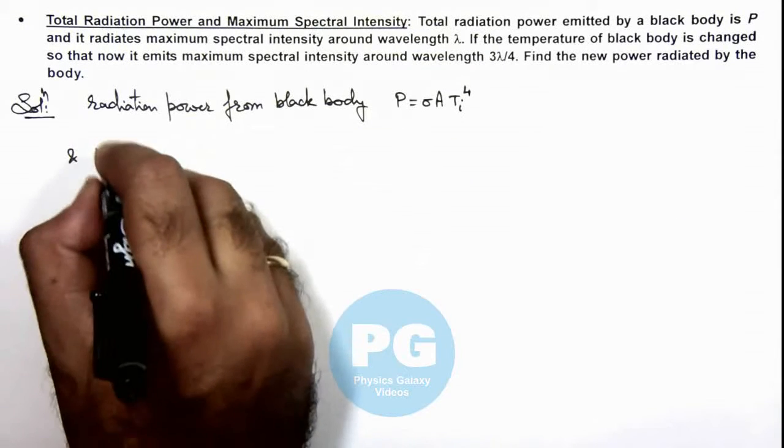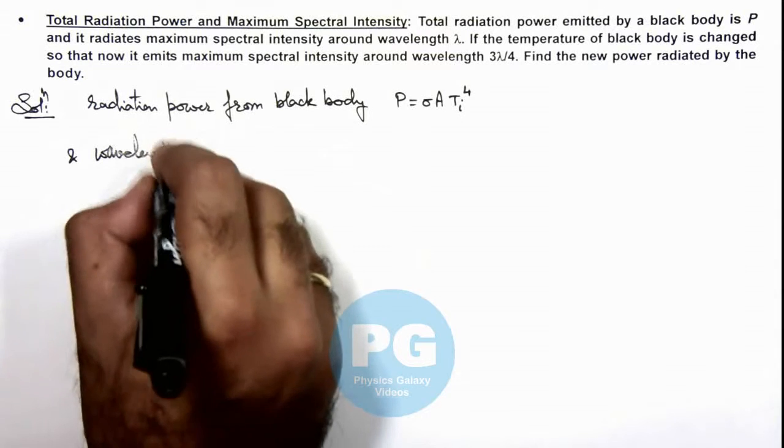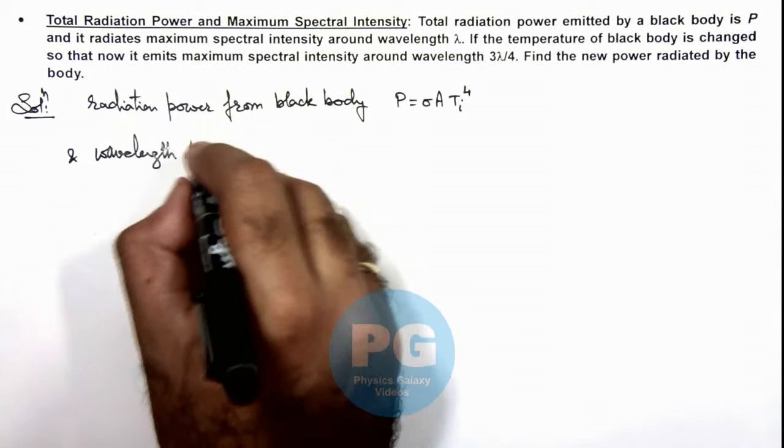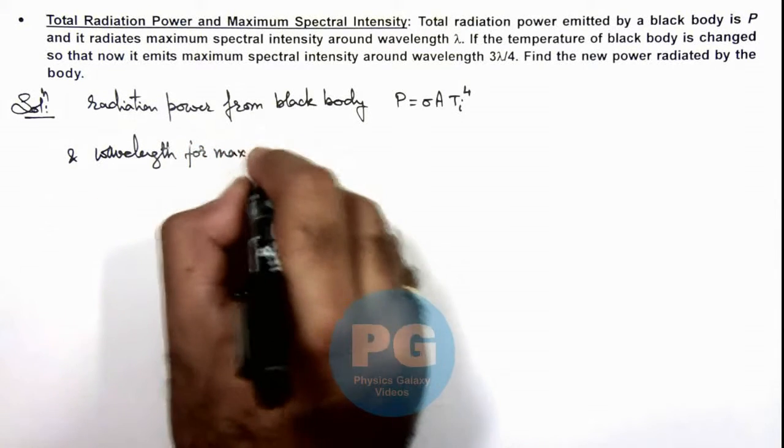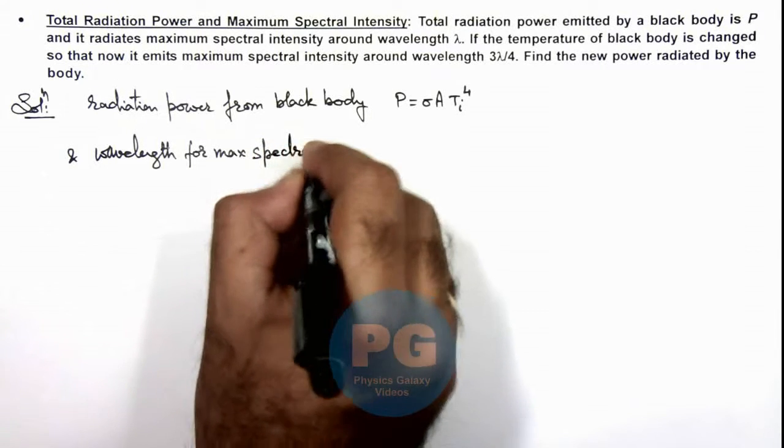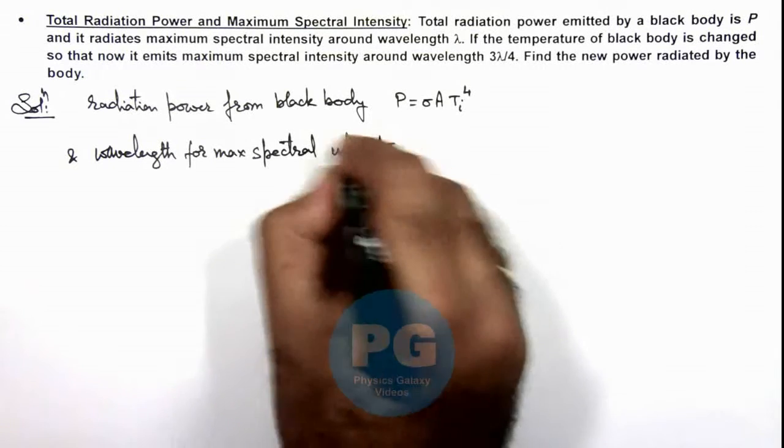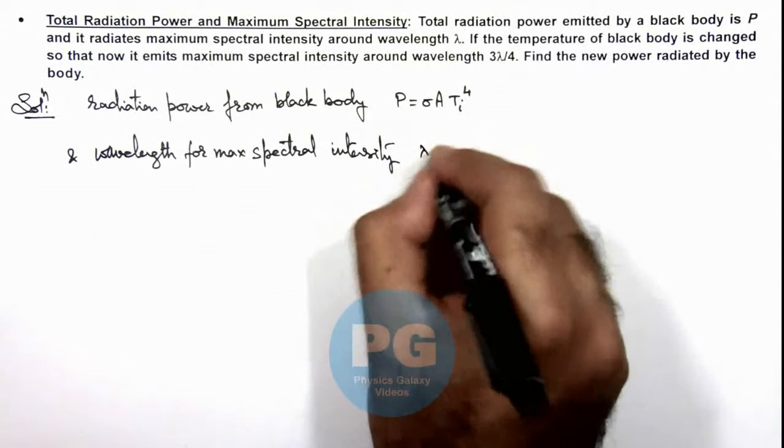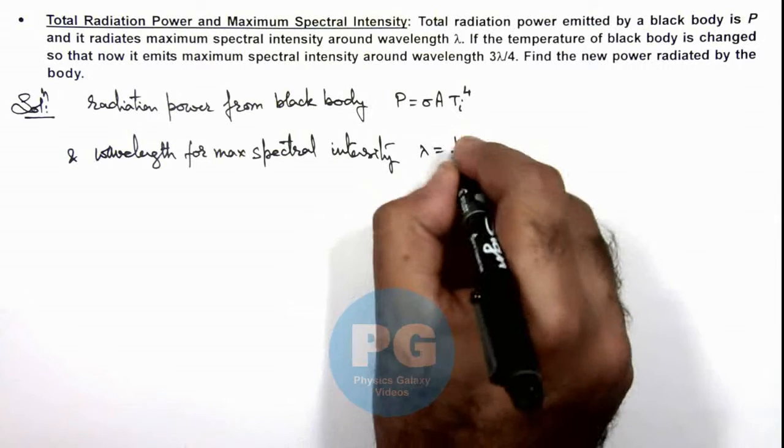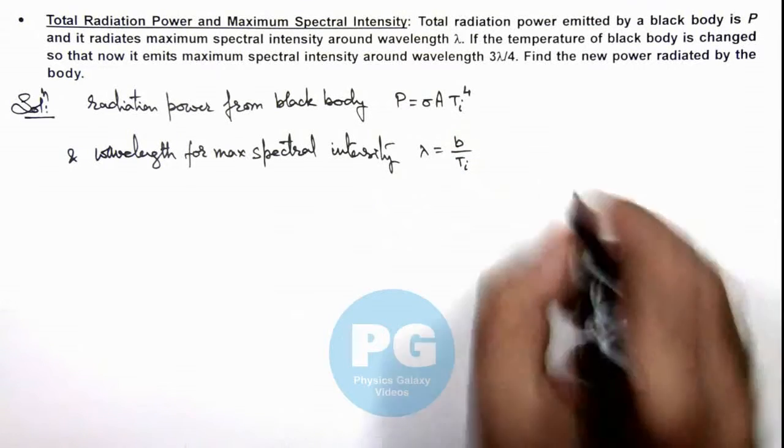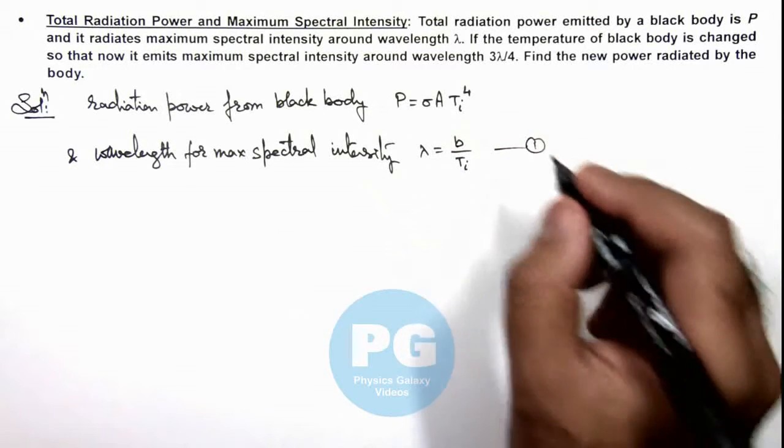And wavelength for maximum spectral intensity can be given as λ = b/T_i, which is Wien's displacement law. This is equation 1.